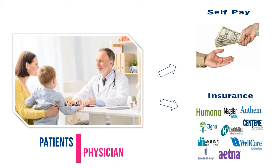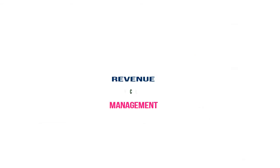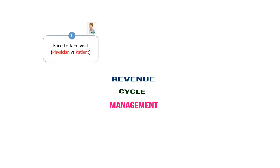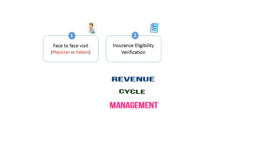Let's see the overall insurance payment process, which is called revenue cycle management. First, the patient has been treated by the physician and needs to pay the bill. What they will do? They submit their insurance form to the hospital, where the hospital team will verify the insurance eligibility details — whether the patient is eligible for complete payment or partial payment.